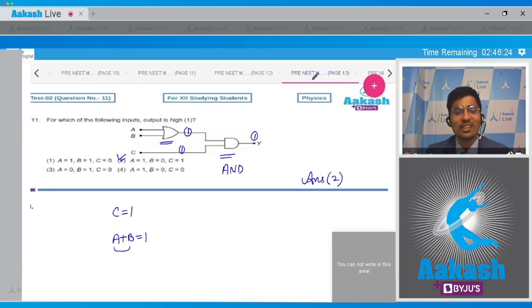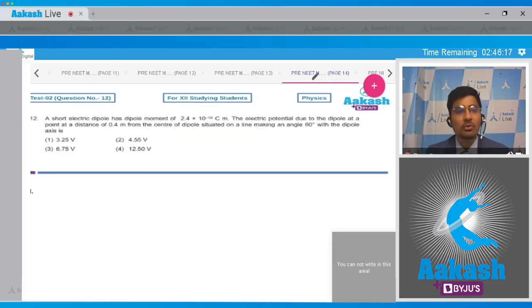Now let us move to the next question, that is question number 12. In question 12, a short electric dipole has a dipole moment of 2.4 into 10 raised to power minus 10 coulomb meters. The electric potential due to the dipole at a point at a distance of 0.4 meter from the center of the dipole situated on a line making an angle of 60 degree with the dipole axis. And the four options are 3.25 volts, 4.55 volts, 6.75 volts, and 12.50 volts.